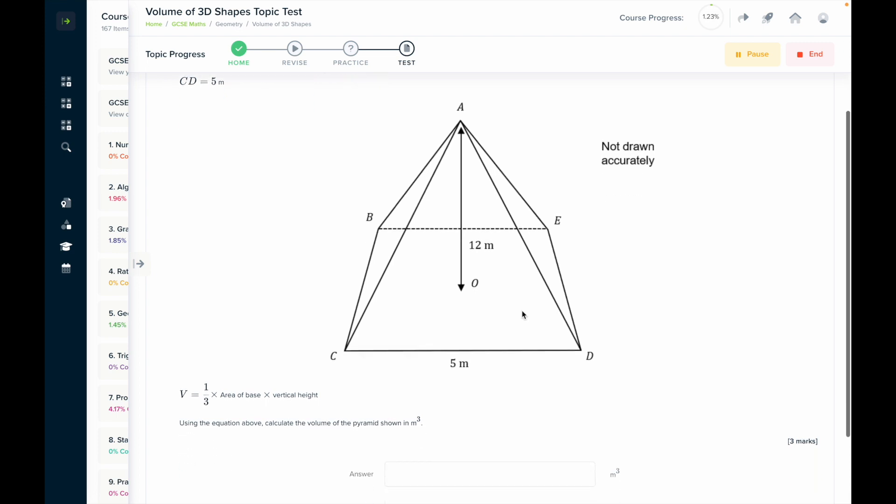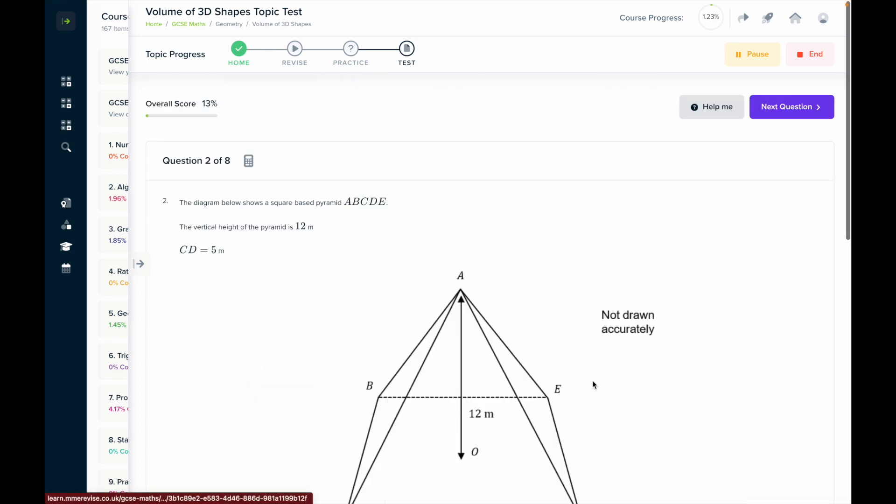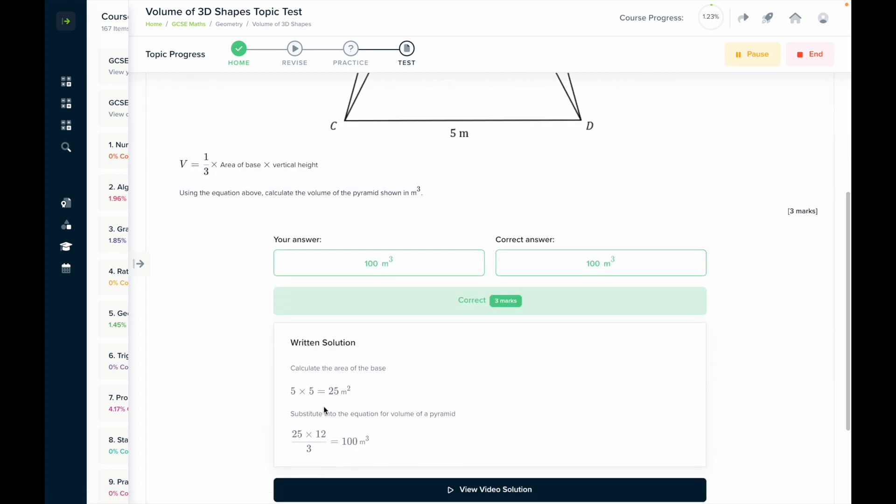So for example, this one, if I think that the answer is 100, I can put that in, mark the question, and then I can have a look at a written solution where it's just a quick explanation of how you should have solved the problem.